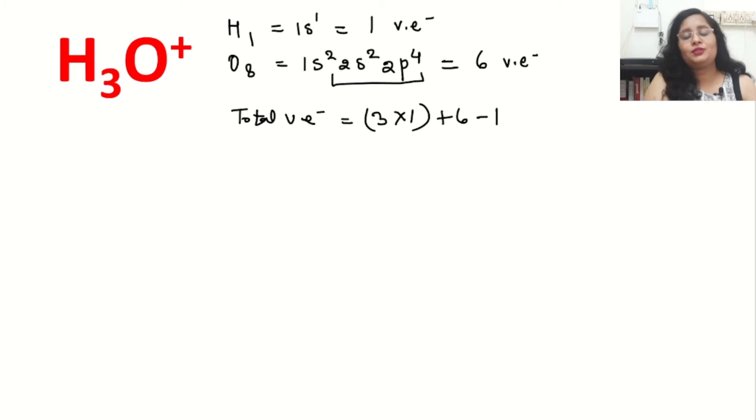If it is plus 1, we will minus 1. If it is plus 2, we will minus 2, and if the ion is having negative charge, we will add that to the total electrons. So here we will minus 1 electron, so it will be 3 plus 6 minus 1, which equals 8 valence electrons.